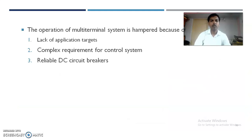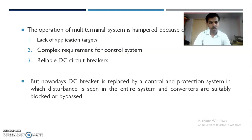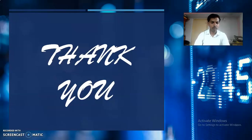The operation of multi-terminal systems is hampered by a few parameters: lack of application targets, complex requirements for control systems, and the need for reliable DC circuit breakers. Nowadays, DC circuit breakers are being replaced by advanced control and protection systems — in the protection system, a disturbance is detected across the entire system and converters are suitably blocked or bypassed. Thank you — this covers the primary information of MTDC systems. We will see details on control and protection of MTDC systems in the next lecture.